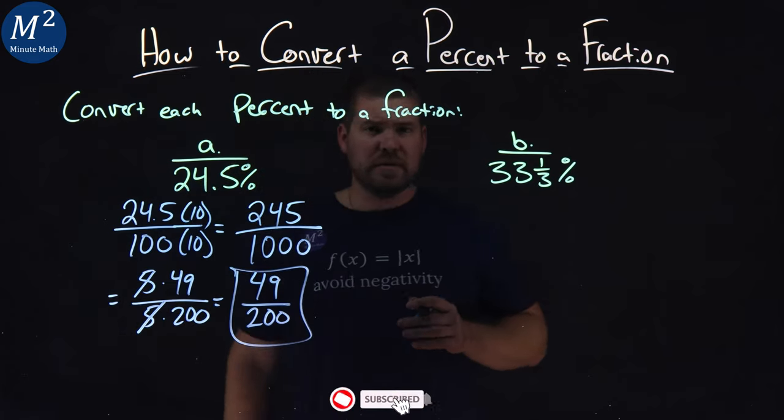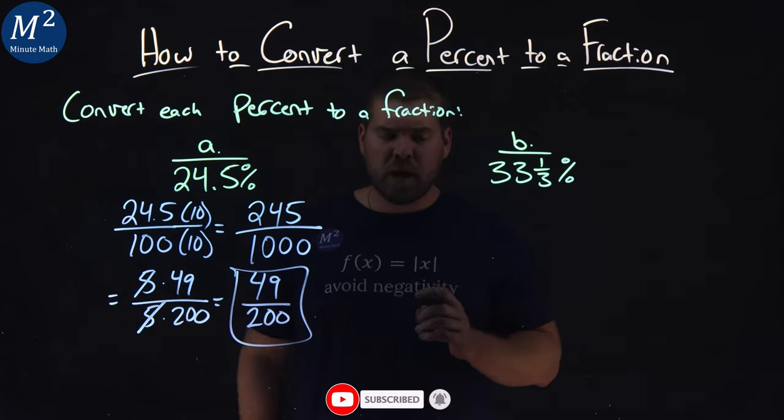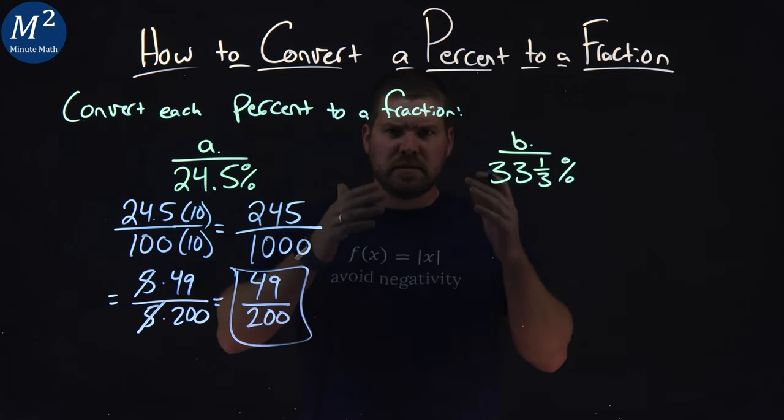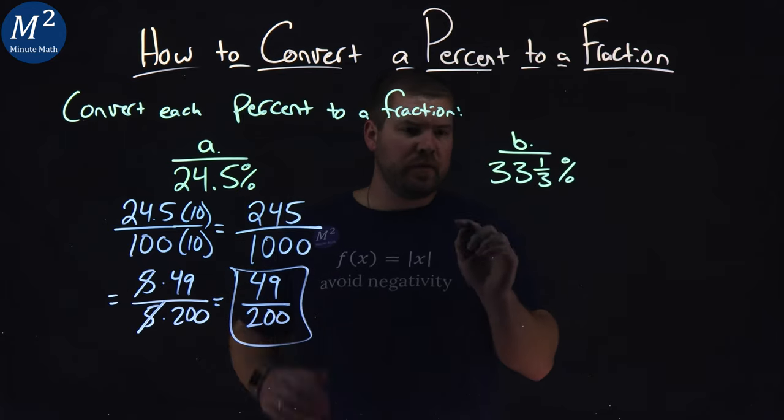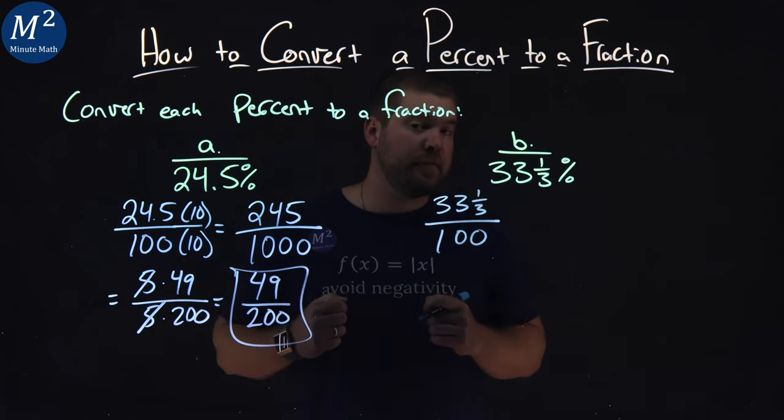Now, the second problem here is a little different. We have 33 and 1 third percent. Well, let's go write this as a fraction over 100 like we always do. 33 and 1 third over 100 is this in fraction form.